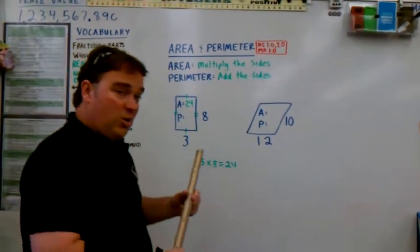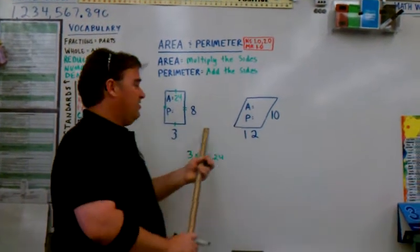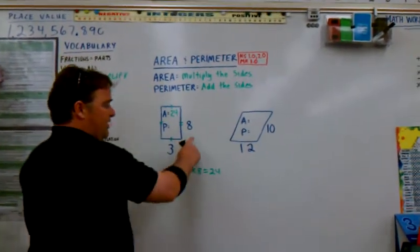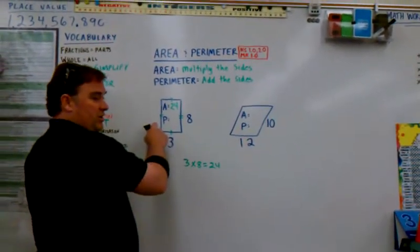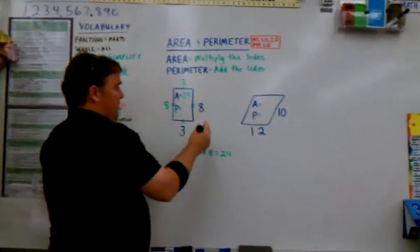Now the perimeter is a little different. What do we have to do with perimeter? We have to add the sides. Now, I noticed one thing. It's eight on this side, so it's probably going to be eight on this side. Three on this side is three on that side. So let's do it.